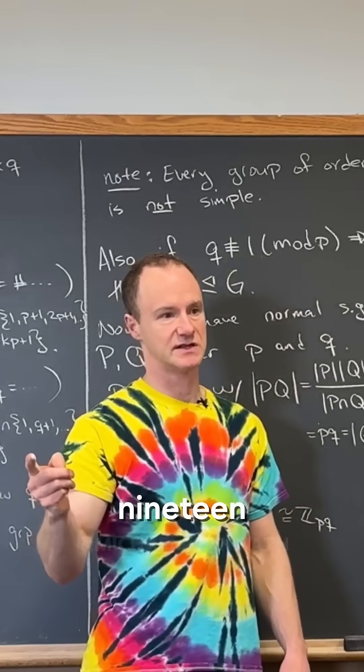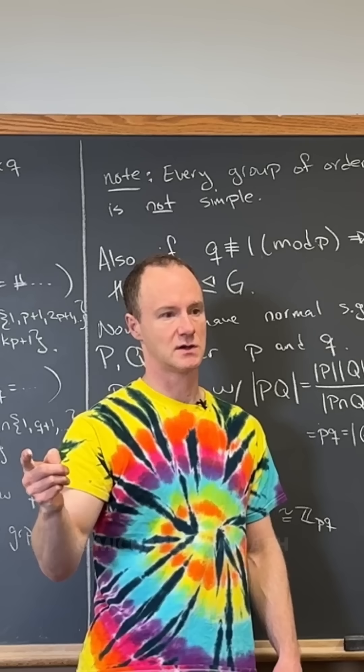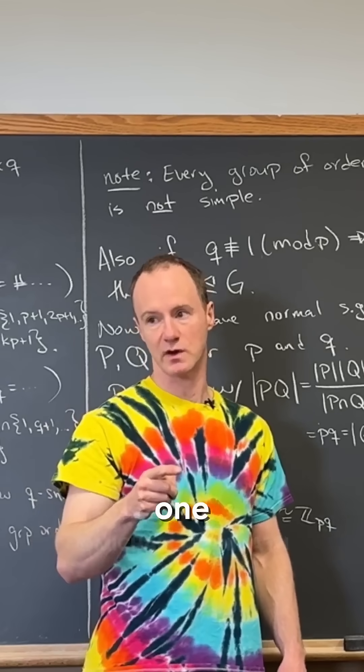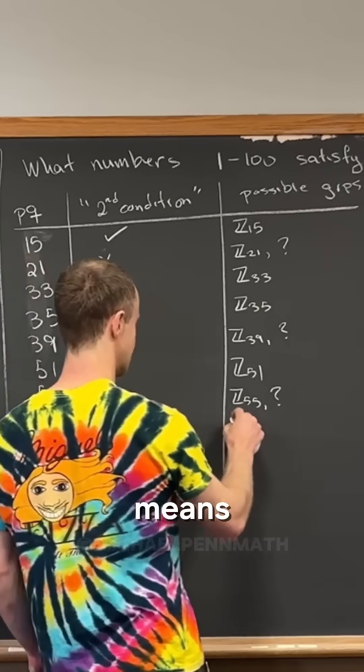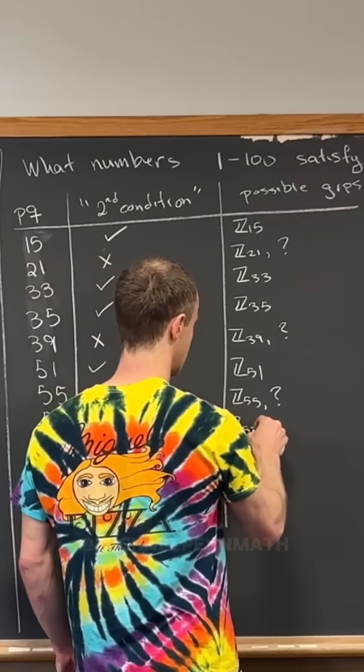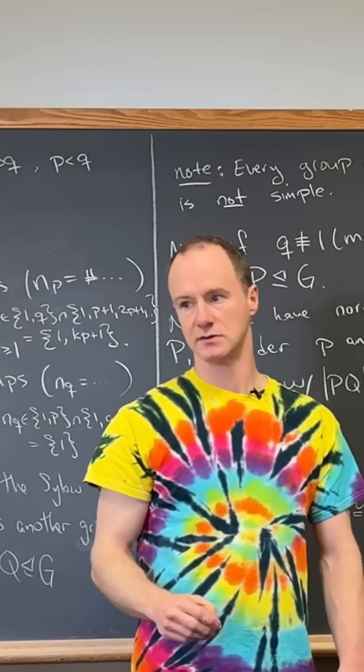57. So you said it was 19 times three. 19 is congruent to one mod three, right? Because one more than 18. So it does not satisfy. So that means there's Z57 and question mark, right?